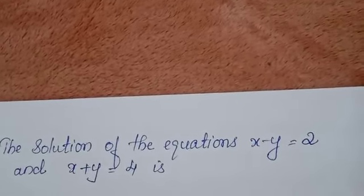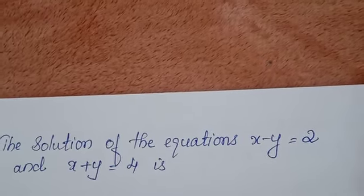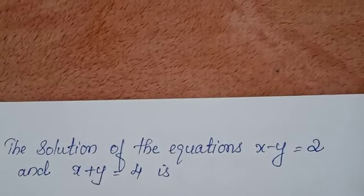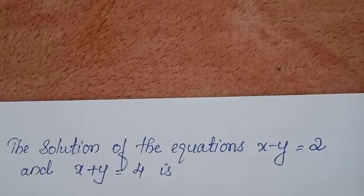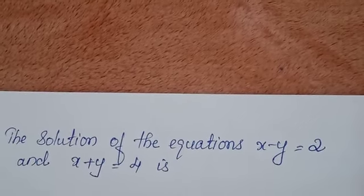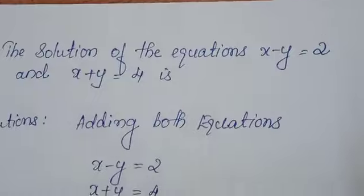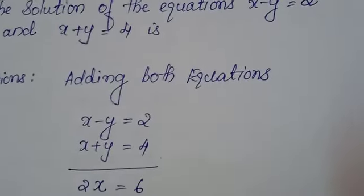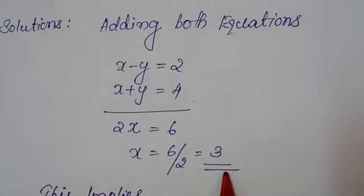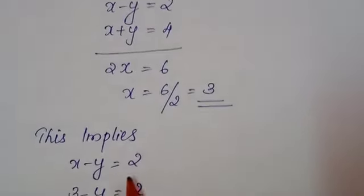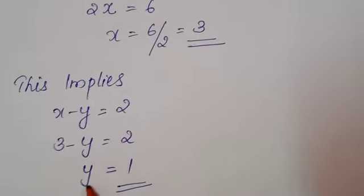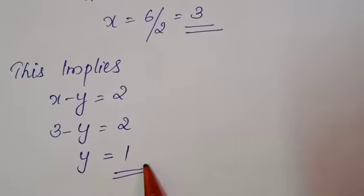Next question. The solution of the equation x minus y equals 2 and x plus y equals 4 is. So, as we know, adding both equations, x minus y equals 2 and x plus y equals 4, minus y and plus y will cancel. Then x plus x is 2x equals 2 plus 4 is 6. Then we should take the value of x equals 6 by 2, that is 3. Then we got the value of 3 and we shall substitute the value of x in equation number 1, that is x minus y equals 2, value of x equals 3, 3 minus y equals 2. Then we should find the value of y equals 1.